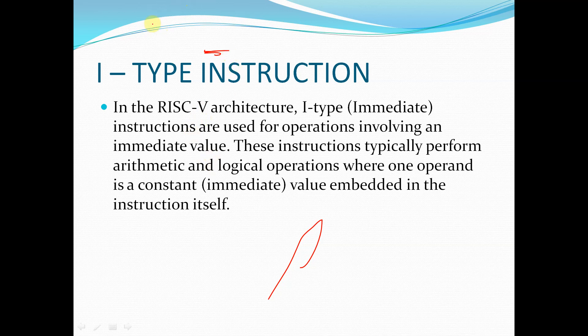In R-Type instructions, which we have already discussed, the values are stored inside the registers and the values are not directly given to the ALU. They are stored in the registers and from those registers we are going to access those values — so the ALU is going to access the operands from the registers.